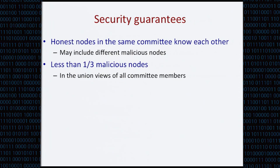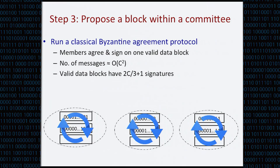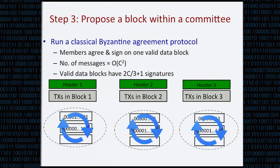The detail of this process is more involved — I encourage you to read our paper. We provide several security guarantees: all O(N/C) nodes in the same committee know each other, although they may include different malicious nodes in their committee views, and with high probability at most one third of committee members are malicious. With these security guarantees, step three is straightforward: all committee members run a classical Byzantine agreement protocol to agree on the same data block, and all committee member signatures are included in the block header, similar to the block header in a Bitcoin block.